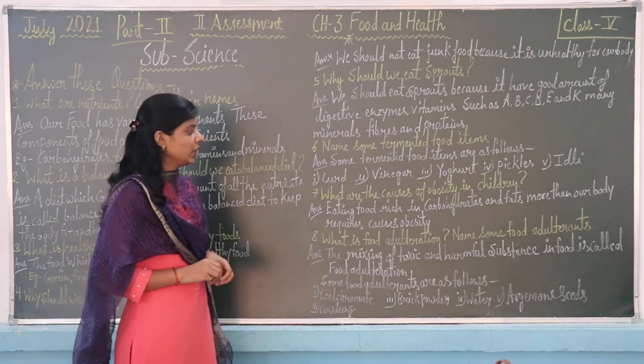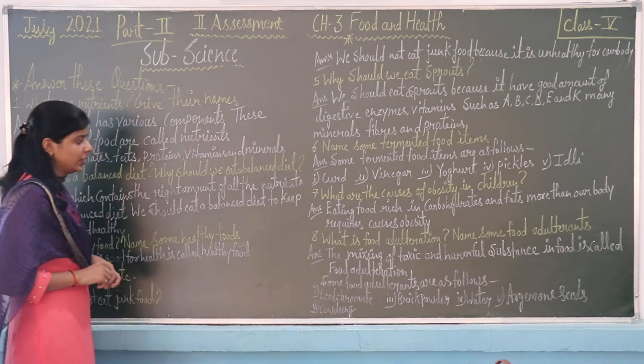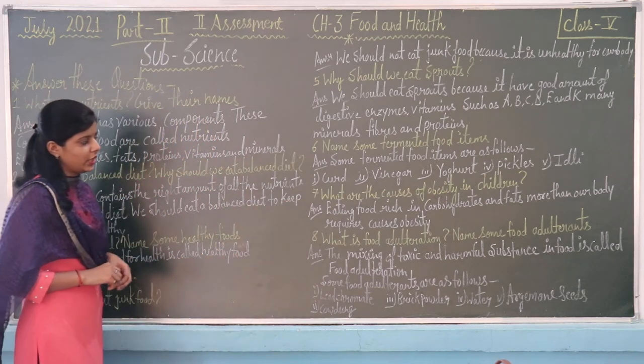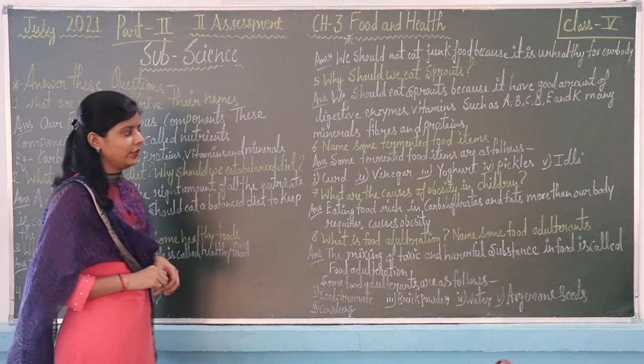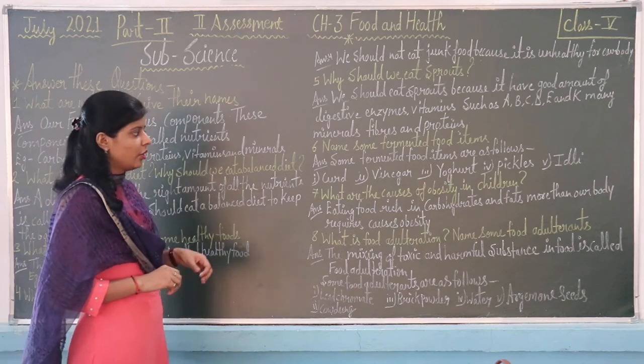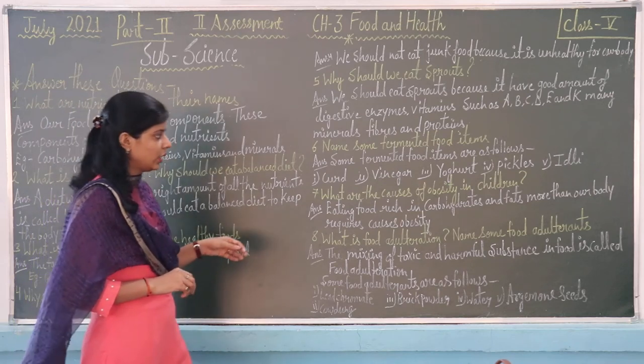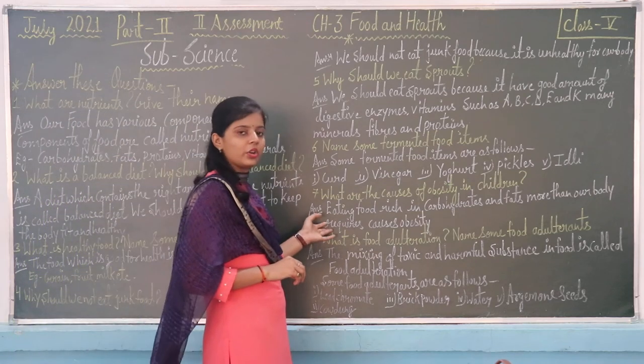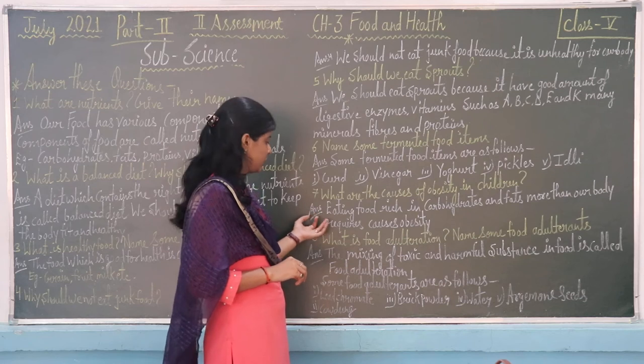Moving to question number 7: what are the causes of obesity in children? Eating food rich in carbohydrates and fats more than our body requires is one of the causes of obesity.